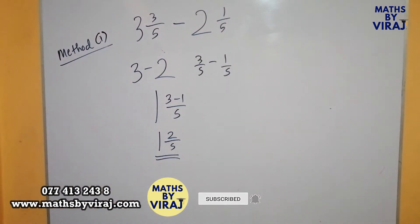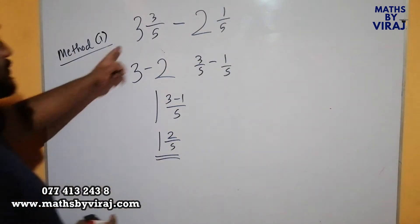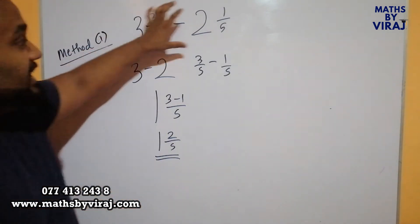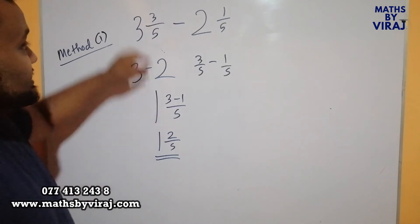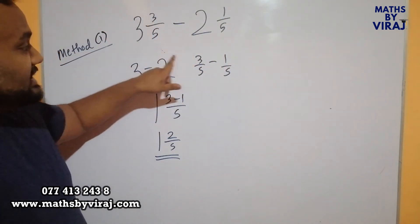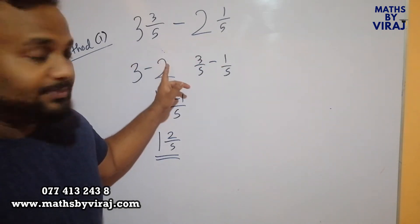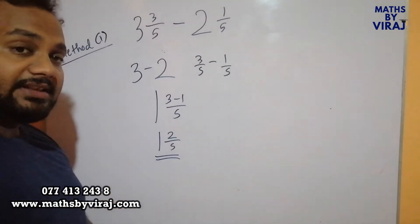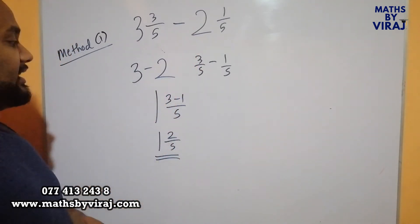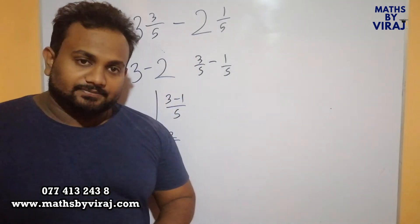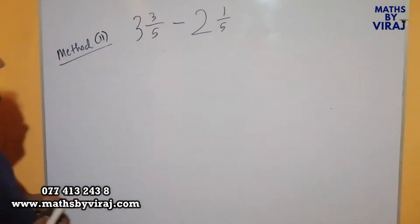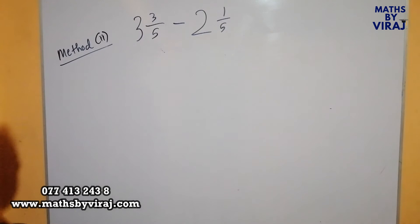Again, when it is 3 and 3 over 5 minus 2 and 1 over 5, you subtract the 2 whole numbers first, and then you consider the 2 proper fractions, which is 3 over 5 minus 1 over 5 in the numerator. Since the denominators are the same, you can simply subtract the numerators. 3 minus 1 is 2, and the denominator remains as 5. Children, if you look at the question again and try to solve it in the second method: